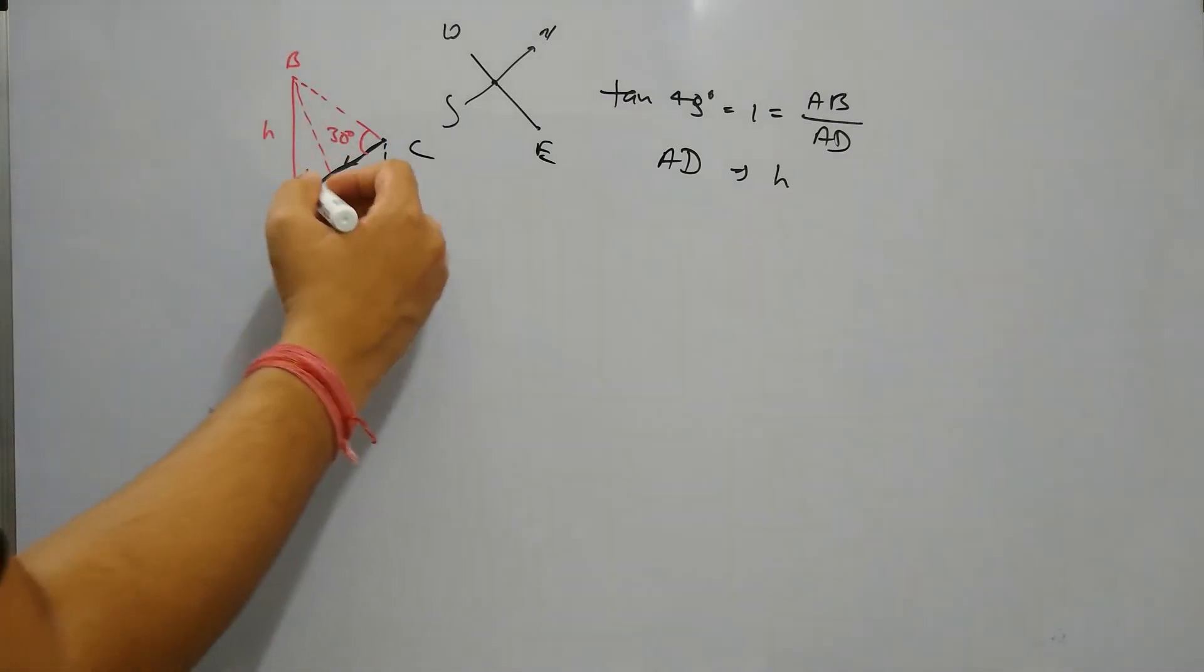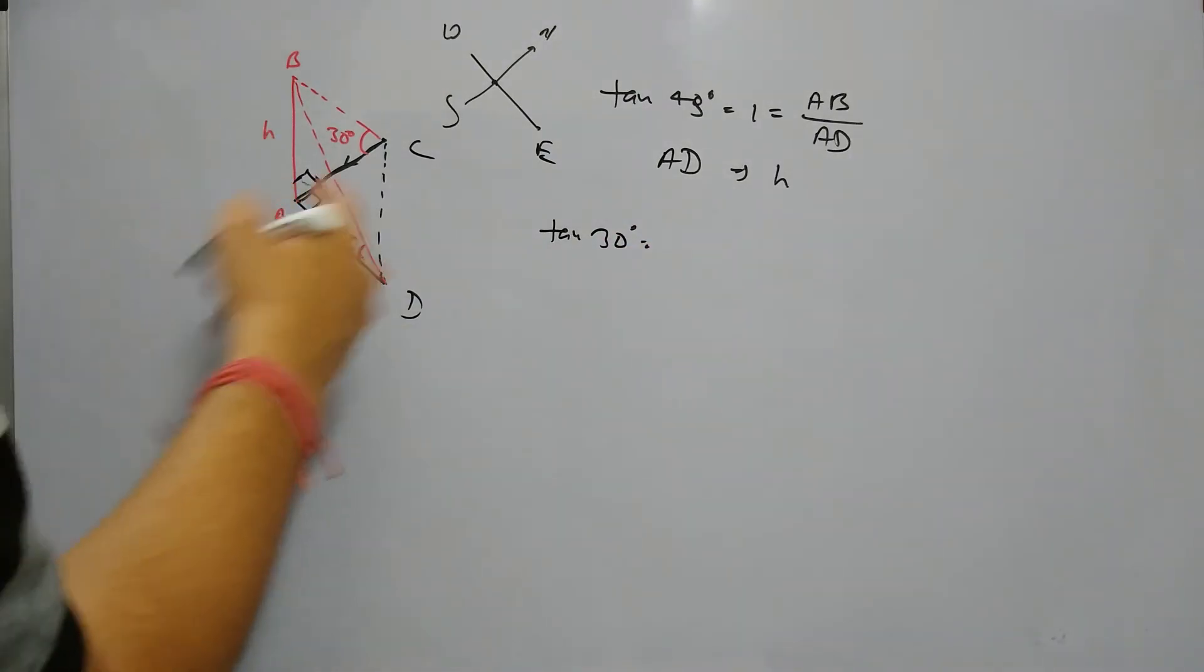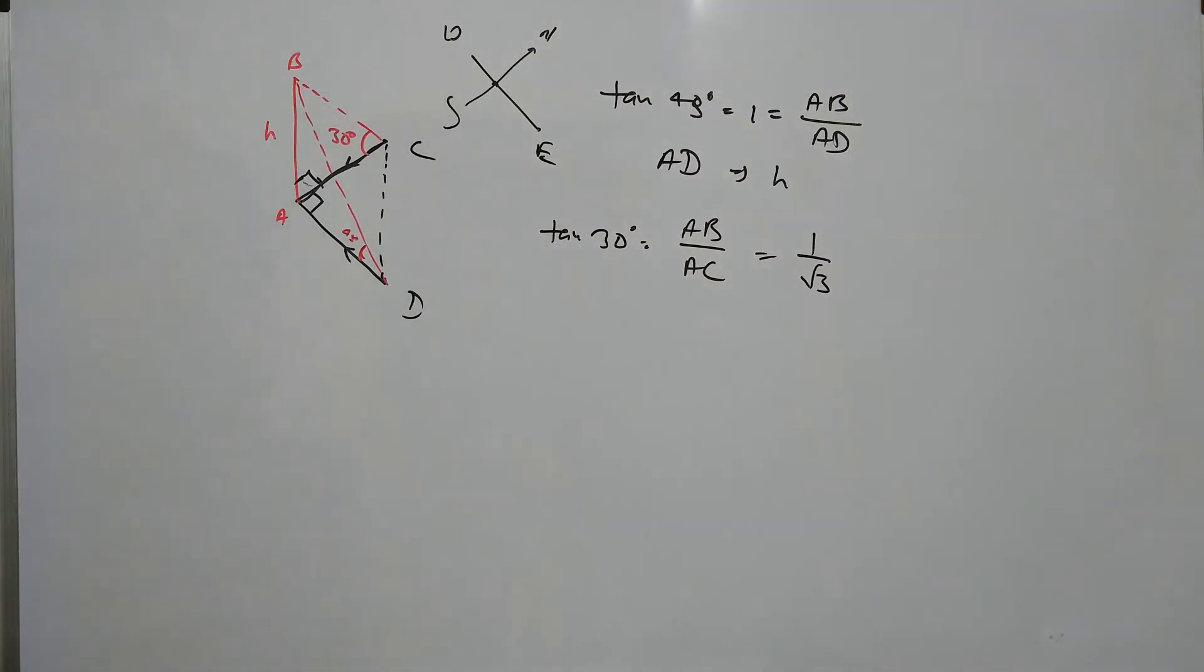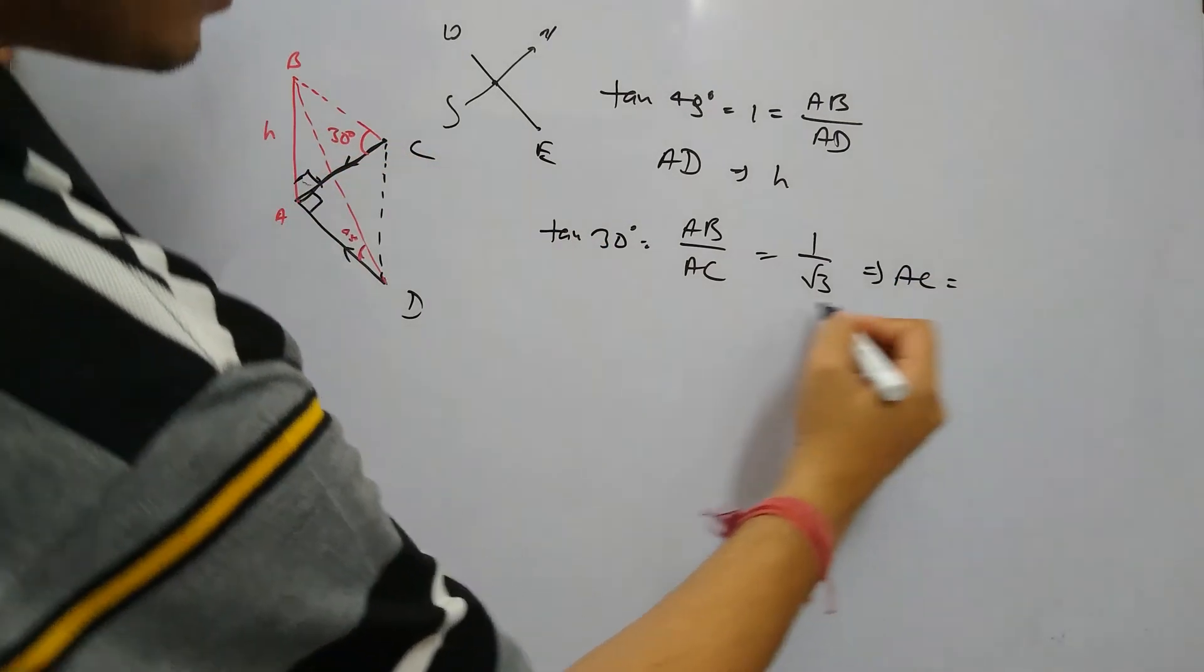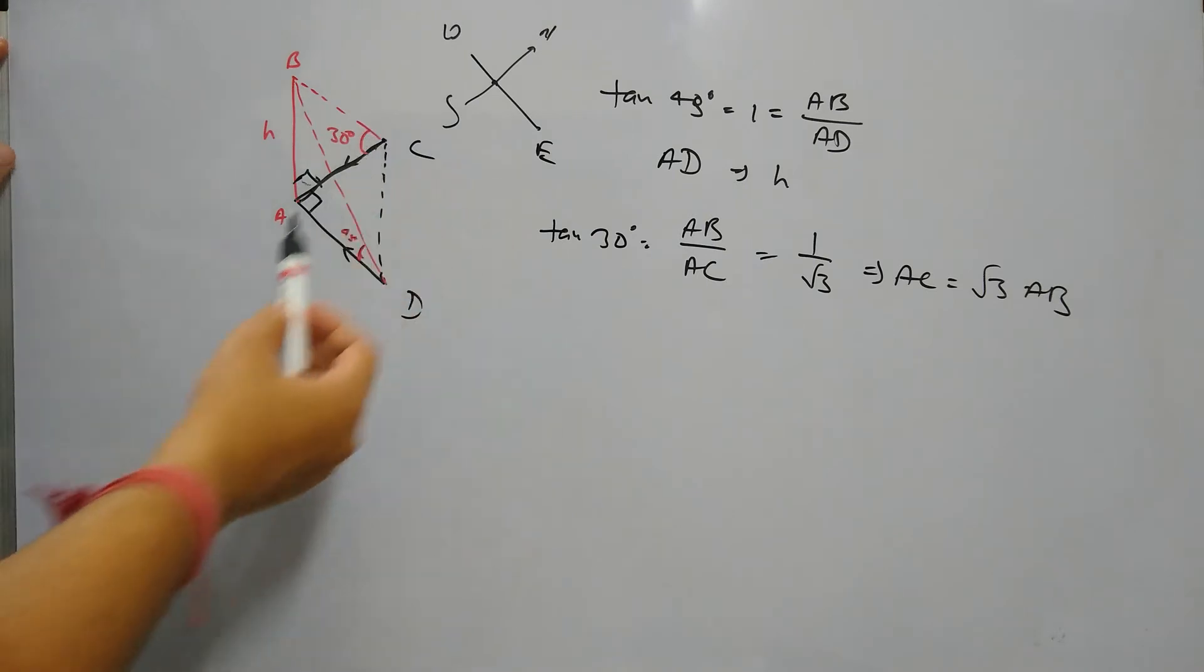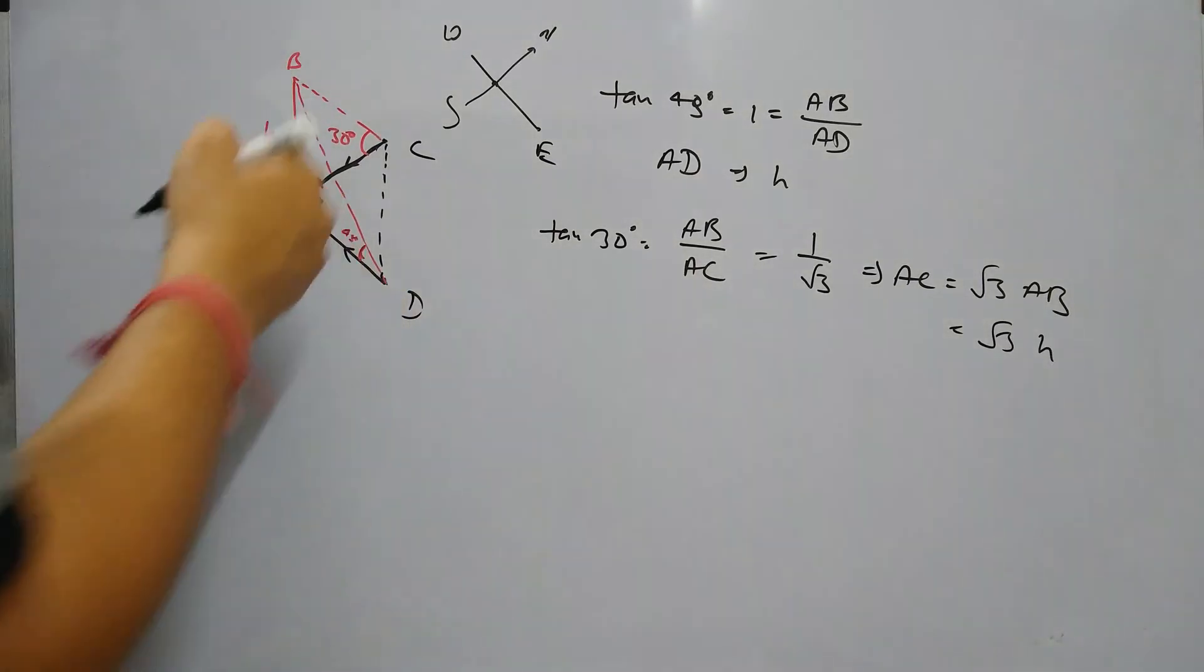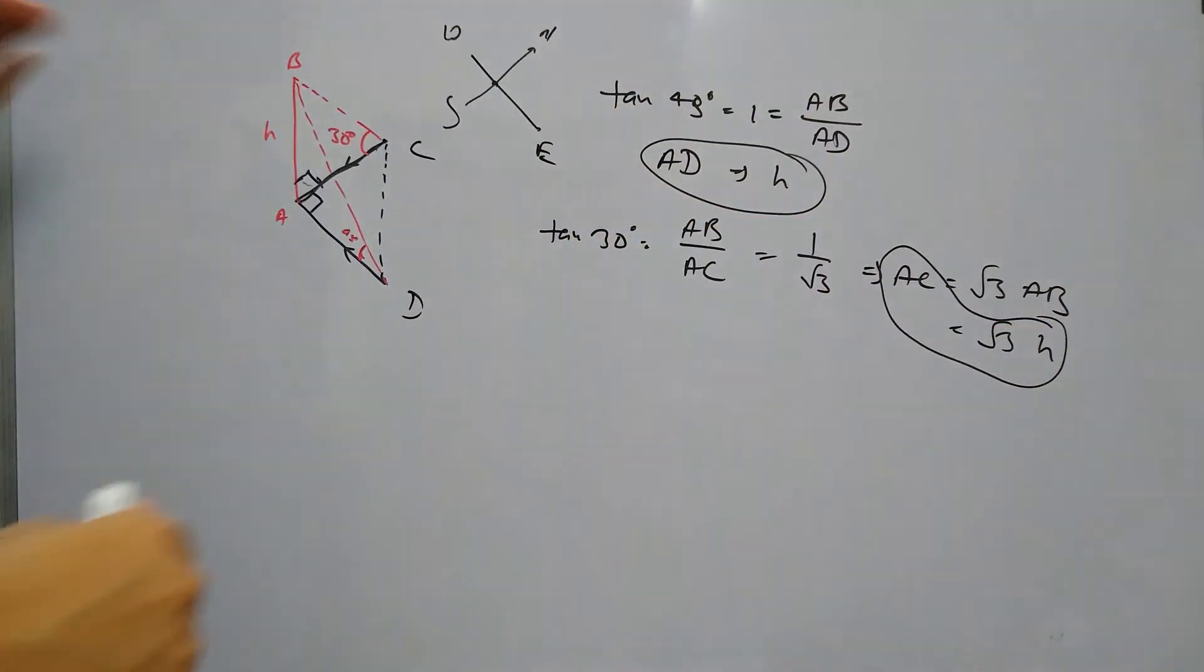Similarly, in triangle ACB if you see, angle ACB is 30 degrees. So tan 30 degrees is AB by AC equals to 1 by root 3. If you keep practicing these things, you will remember it. The side of a triangle having 30 degree angle is always root 3 times the other side. So here AC is root 3 times H. By practice you can directly write these things in exam.